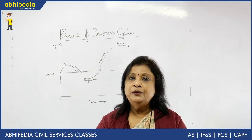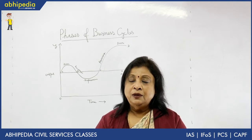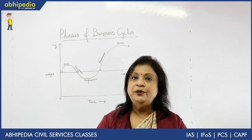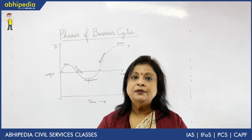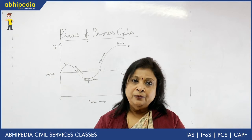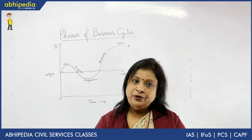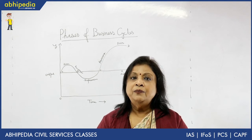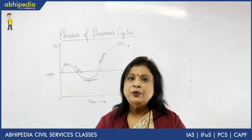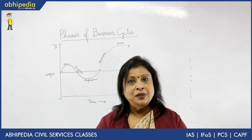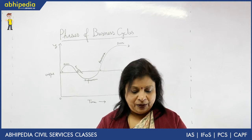Under cheap money policy, the bank rate will be reduced, CRR will be reduced, SLR will be reduced, and required margins will be reduced. These are the various tools used by the central bank in monetary policy to control the severity of boom, recession, or depression.